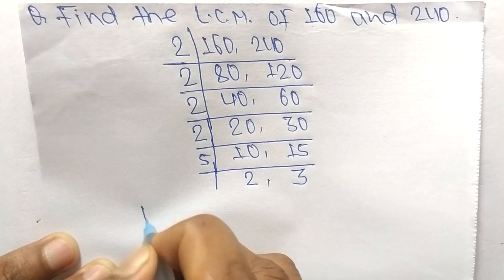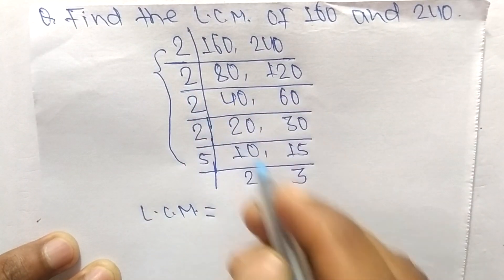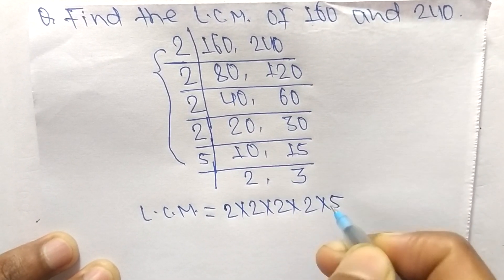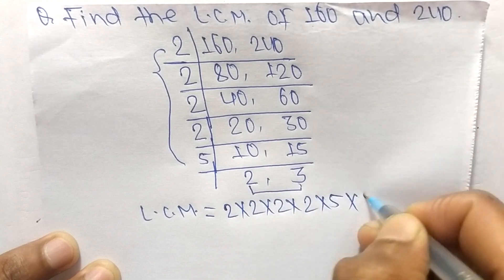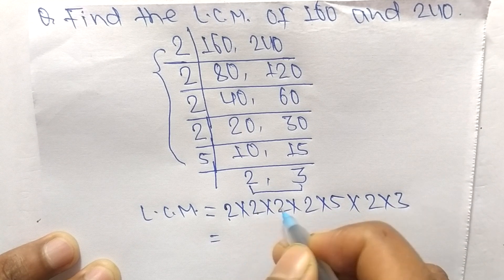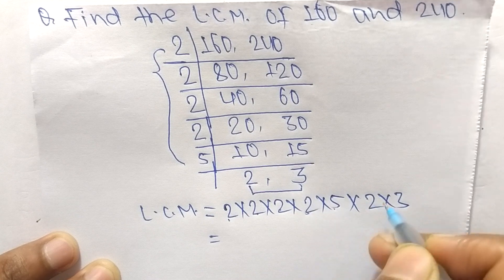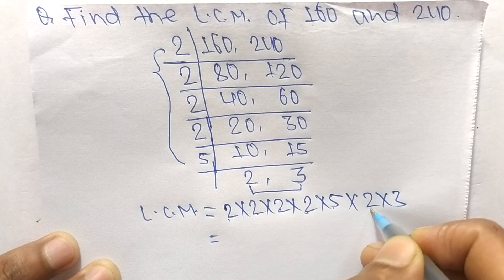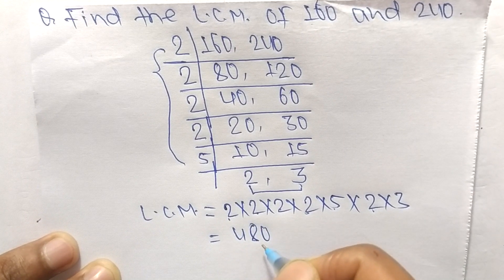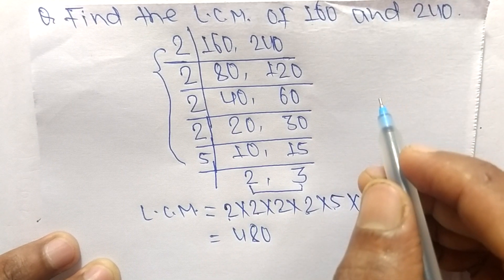So the LCM is equal to: from the division steps we have 2 times 2 times 2 times 2 times 5, and from the last part we have 2 and 3. Calculating: 2 times 2 equals 4, 4 times 2 equals 8, 8 times 2 equals 16, 16 times 5 equals 80, and 80 times 3 equals 480. So 480 is the LCM of 160 and 240.